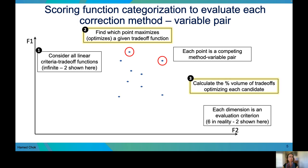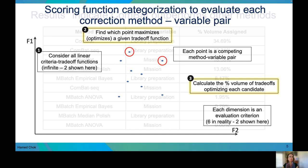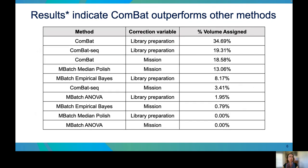We can then calculate the percent volume of tradeoffs optimizing each candidate, which helps us quantify the contribution from each evaluation criteria. Our initial results shown in this table indicate that COMBAT outperforms other methods. COMBAT correcting for the library preparation variable was assigned over 34% volume, followed by COMBAT-seq correcting for library preparation, and then COMBAT again correcting for the mission variable.